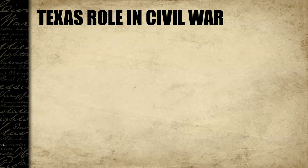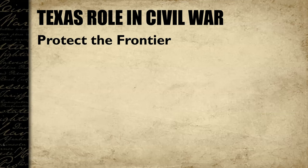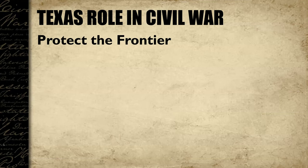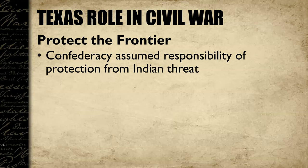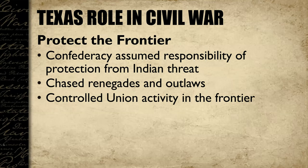Another role Texans played in the Civil War was protecting the frontier. Prior to the war, the United States Army had occupied forts along the frontier and protected settlers from Native Americans. When the Civil War started, the Confederate Army ran the Union soldiers out and took over those forts. The Confederacy then assumed responsibility for protecting people from Indian threats, chasing renegades and outlaws, and controlling Union activity on the frontier — patrolling to make sure Texas wasn't invaded from the west.